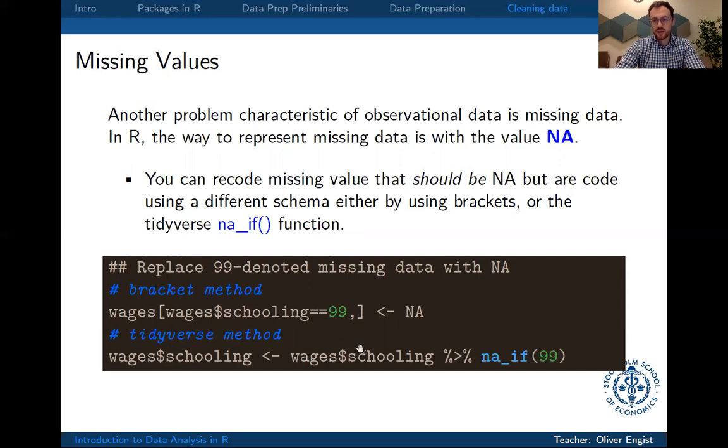In tidyverse, this would be done by using the function NAIF, and for example, if we know that every observation that has schooling value 99 is missing, we just apply NAIF with 99 and then pipe the wages schooling data into this function.